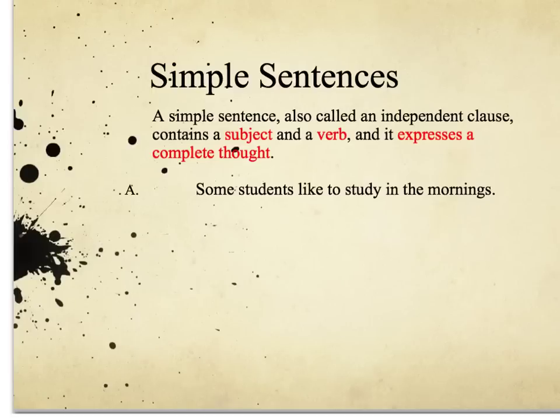Today we're going to learn about three different types of sentences. The first one is called a simple sentence. A simple sentence is when you have an independent clause — it contains a subject and a verb and expresses a complete thought.